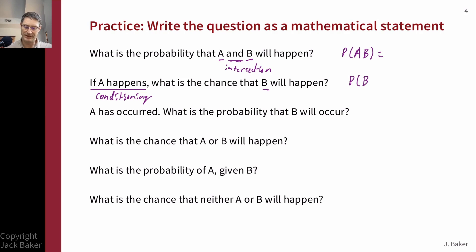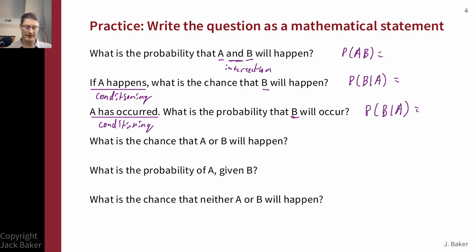Same thing in the third case: if we've got a statement that says 'A has occurred,' that's again a conditioning statement, and we're looking for the probability of B given A. When we get to the fourth case, I've got 'A or B' — 'or' refers to a union. So here I'm looking for the probability of A union B, meaning any outcome in event A or event B could satisfy this question. Sometimes we'll see the word 'given' right in the sentence — that's a conditioning case, giving probability of A given B.